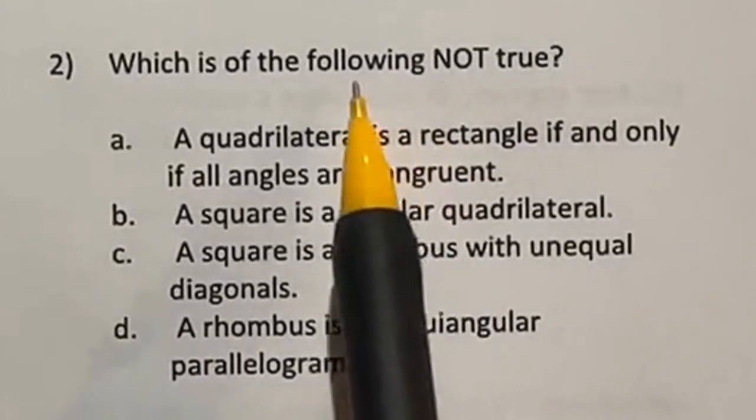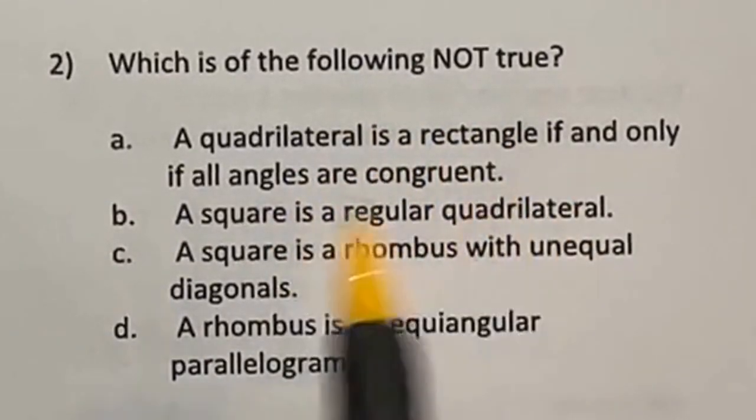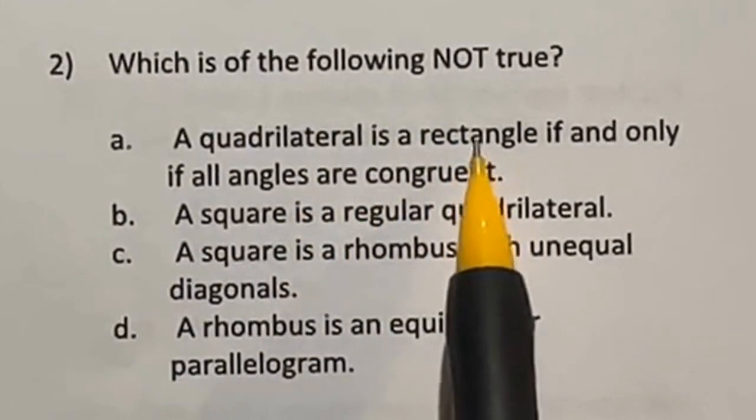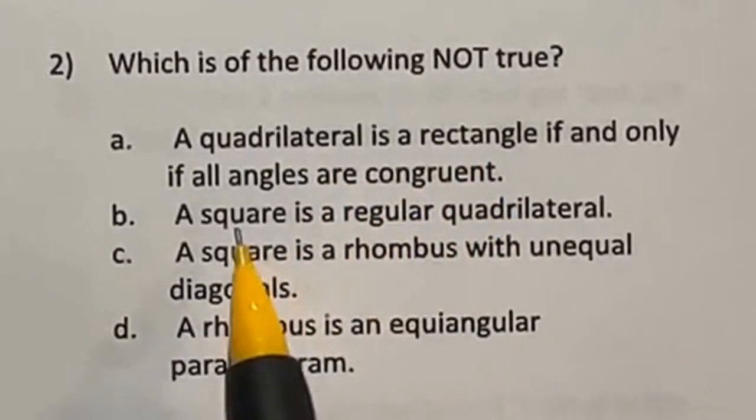This test is 0 for 2 for these geometry not true questions. Let's look at this. It says a quadrilateral is a rectangle if and only if all angles are congruent. That's actually true because in a rectangle, they're all 90 degrees. And if they're all 90 degrees, it would make it a rectangle. So that's the only way that would work.